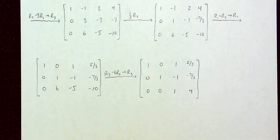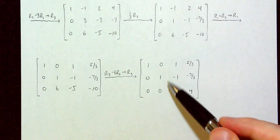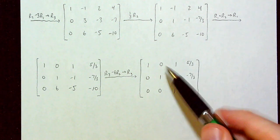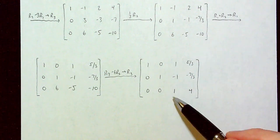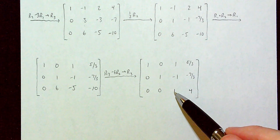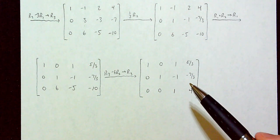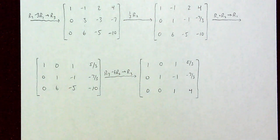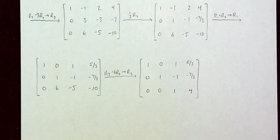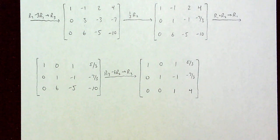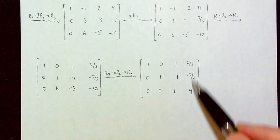We now have our second column in the form we want: 0, leading 1, and then 0. Also, note that in our third row we have our leading 1 in the correct position — directly to the right of the leading 1 in the row above. Now pause the video and try the correct row operations to make the remaining entries in the third column zeros.